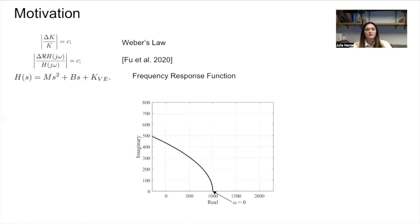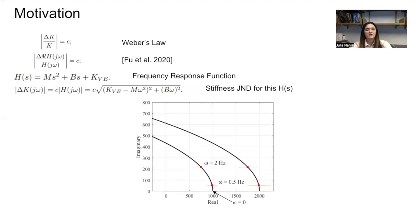Shown here is the frequency response function of a spring rendered through open loop impedance control. Fu's modified Weber's law can be used to predict a stiffness JND at any frequency. For example, in this case, the JND is smaller at 2 Hz than at 0.5 Hz, as shown by the blue lines. Different stiffnesses shift the frequency response function and alter the predicted JND at each frequency.